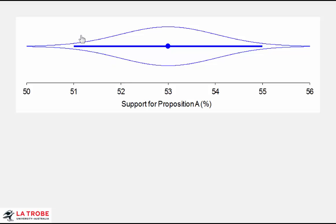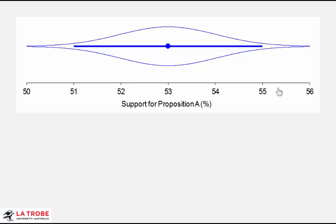Down here, beyond the interval, the cat's eye figure is really quite thin, and so we have values that are really relatively implausible as we move away from 53 and down to 51 or 50, or the same as we move up to values beyond 55 and out towards 56. It's the fatness of the cat's eye that indicates relative plausibility or likelihood of these values along this axis.